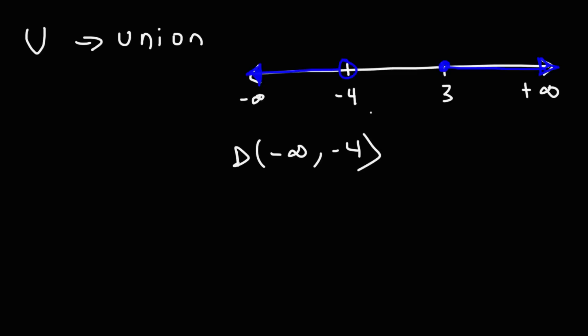Since we have an open circle at negative 4, we're going to use a parenthesis. Now we want to combine it with this section. So we want to combine those two. So we would use the union symbol to connect them together. Now 3 is included, so we're going to use a bracket to include 3. And then it's going to go to a positive infinity. So U represents union.